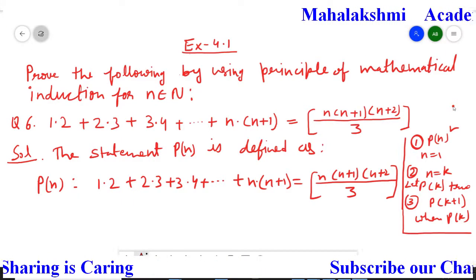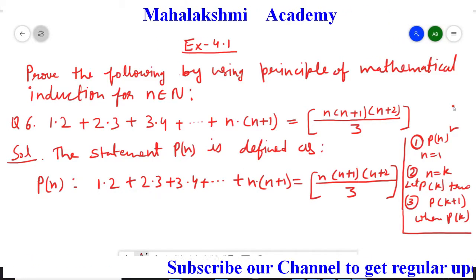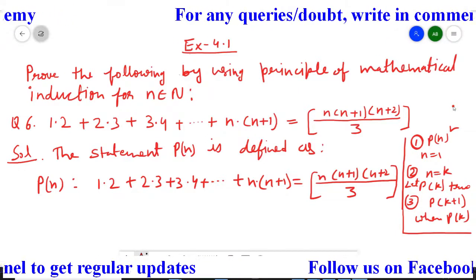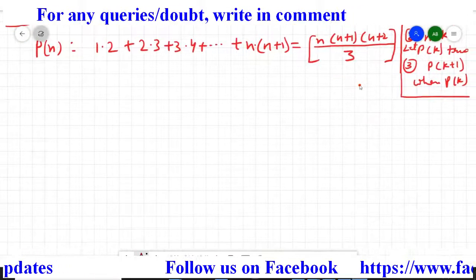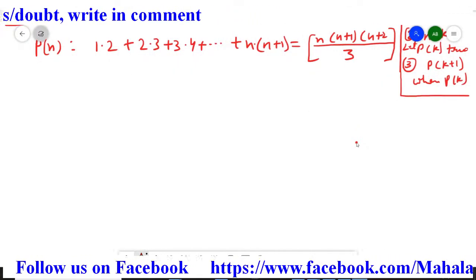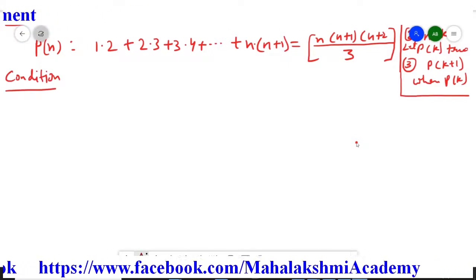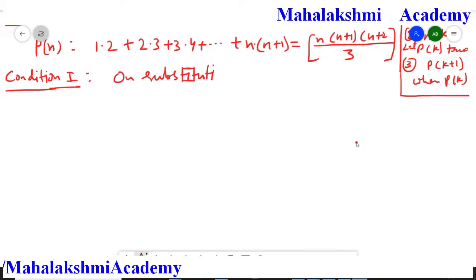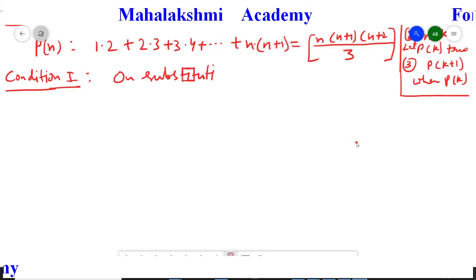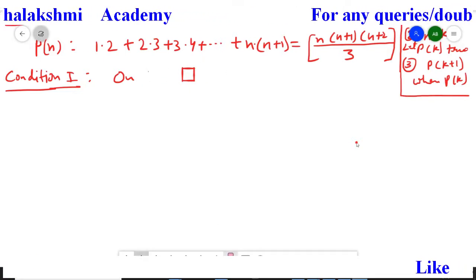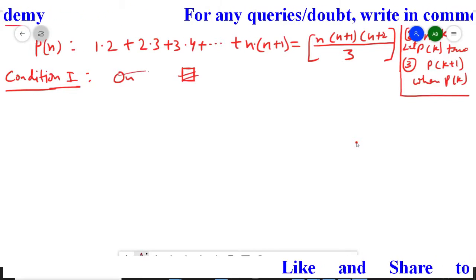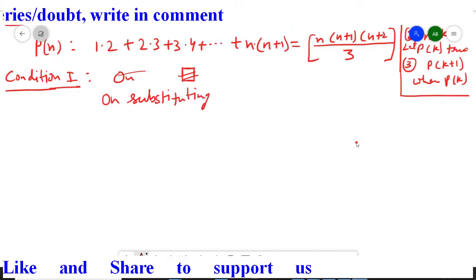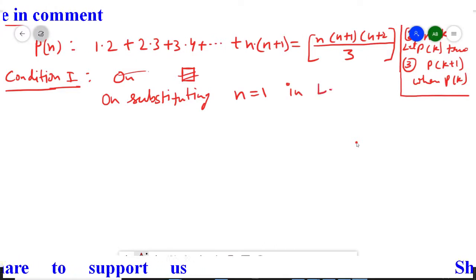In the first step, we have to prove that for n equal to 1 the statement is true. In the P(n) statement, wherever n appears — on the left hand side as well as the right hand side — instead of n we are going to replace 1. On substituting n equal to 1 in the left hand side of P(n), we get P(1).